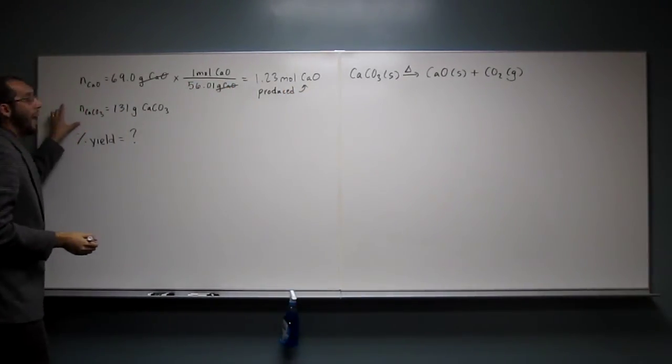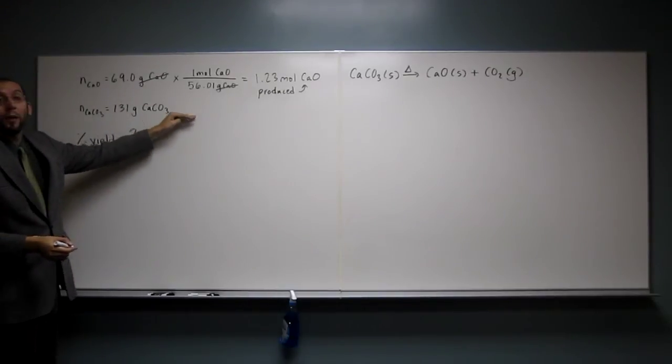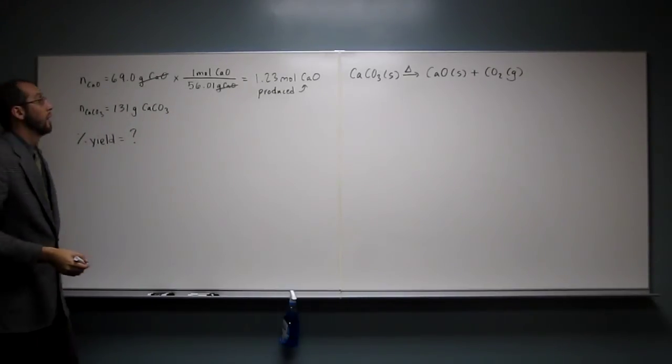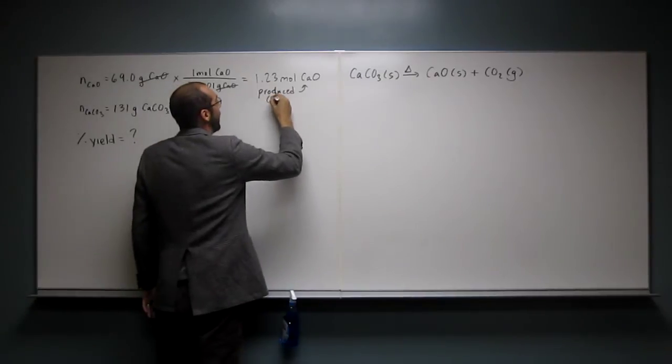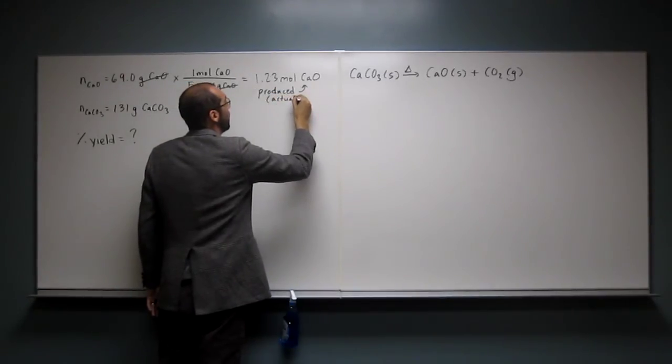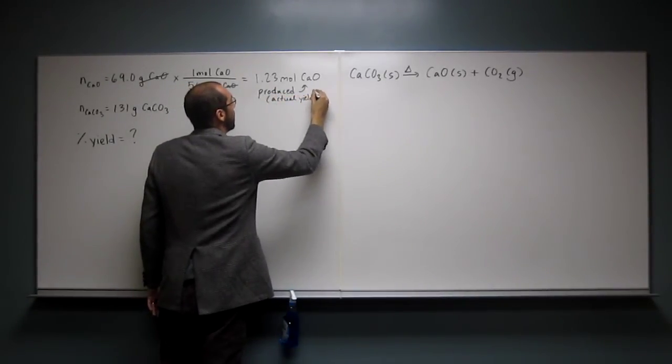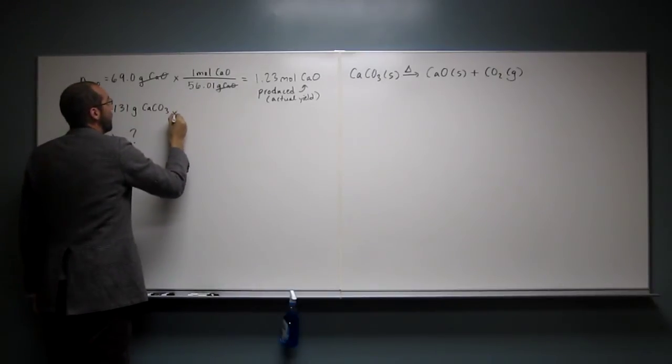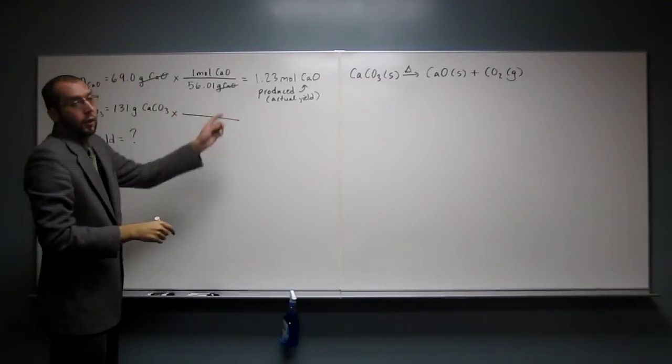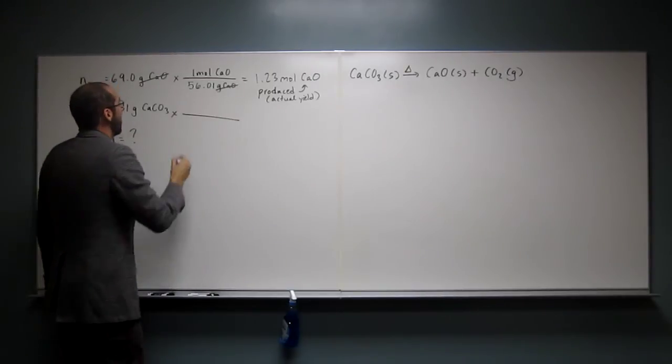So how much could we have? What was the theoretical yield? This is the produced or actual yield. So what's the theoretical yield? Well, we've got to go from the starting material to calcium oxide.